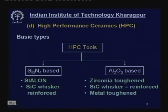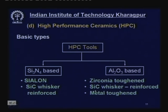Silicon nitride based tools can be converted to high performance through making Sialon or through silicon carbide whisker reinforcement. Alumina-based tools can be strengthened and toughened by zirconia toughening, silicon carbide whisker reinforcement, and metal toughening. Metal toughening was earlier done using iron, molybdenum, cobalt, or nickel, but recently it has been found that silver added into alumina produces brilliant cutting tool material.